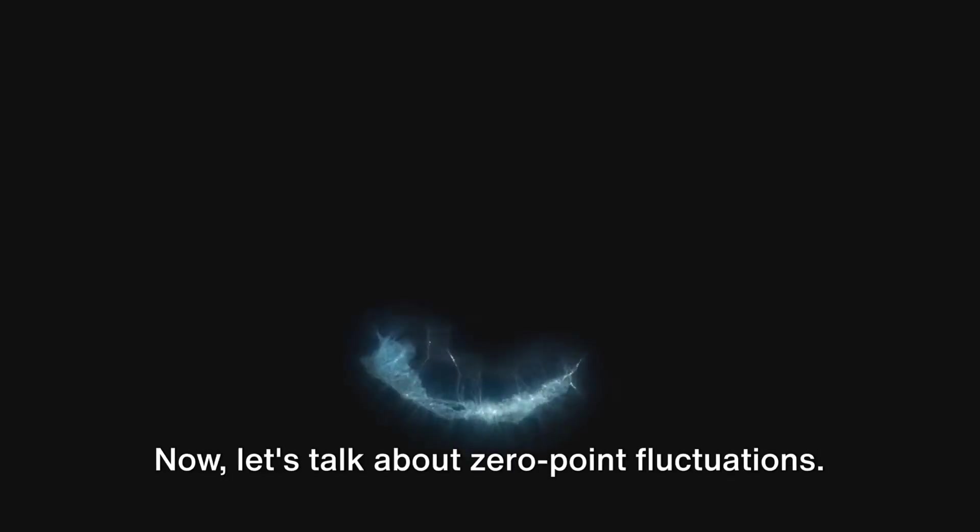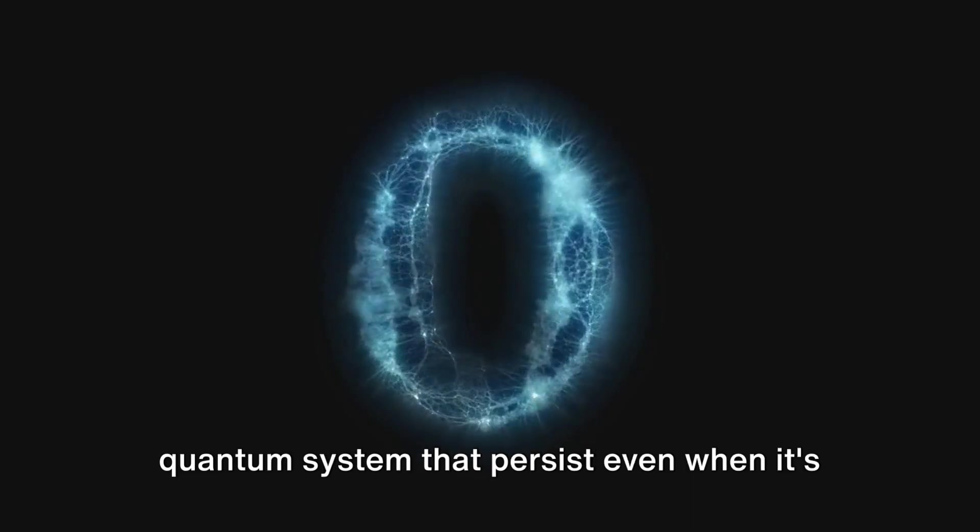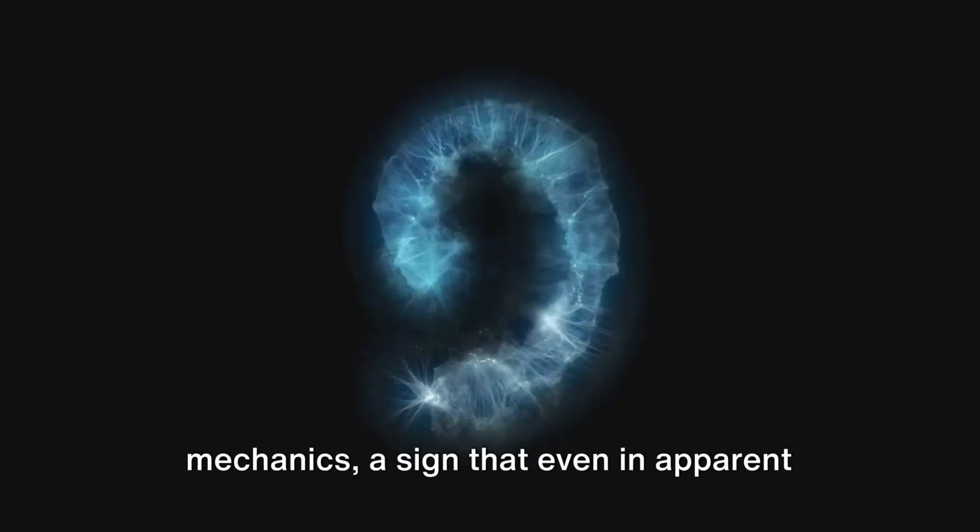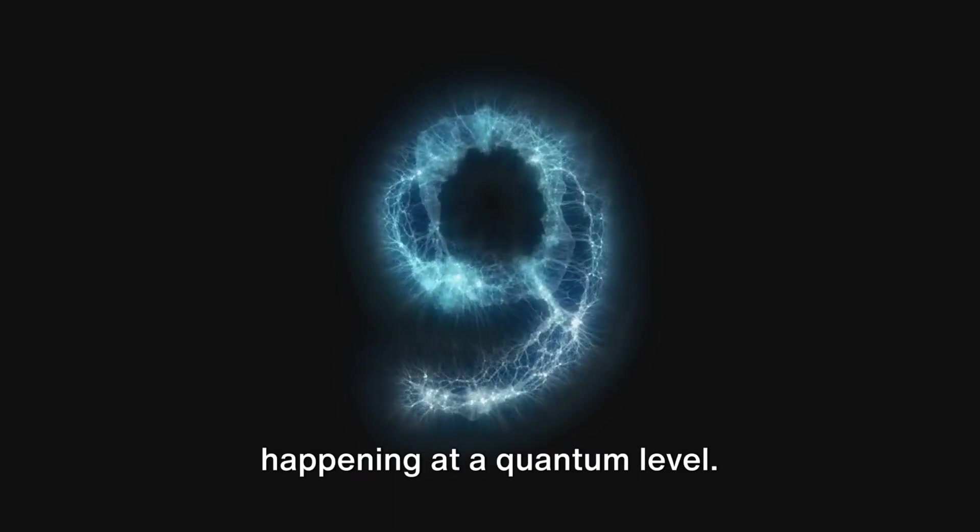Now let's talk about zero-point fluctuations. These are the tiny vibrations in a quantum system that persist, even when it's cooled down to absolute zero. They're a fundamental part of quantum mechanics, a sign that even in apparent stillness, there's always something happening at a quantum level.